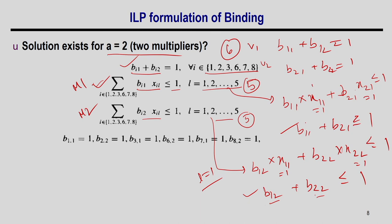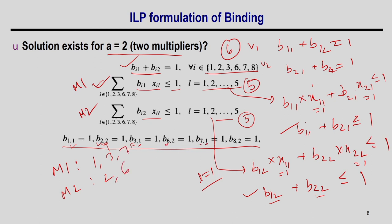Solving all 16 constraints, the ILP gives: op1→M1 (B11=1), op2→M2 (B22=1), op3→M1, op6→M2, op7→M1, op8→M2. The rest of the BIR values are 0. This is the complete binding solution.